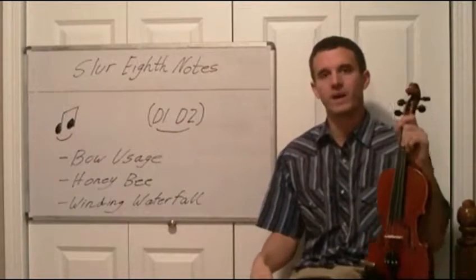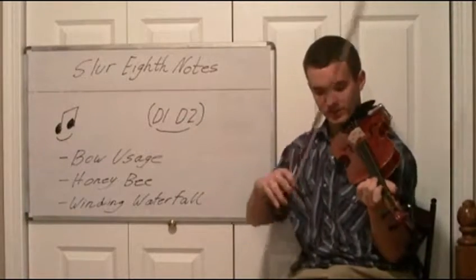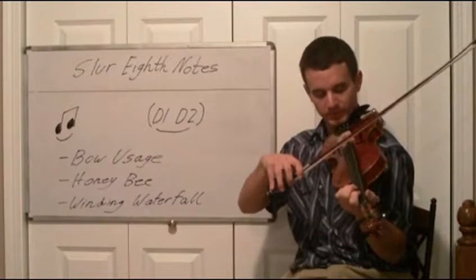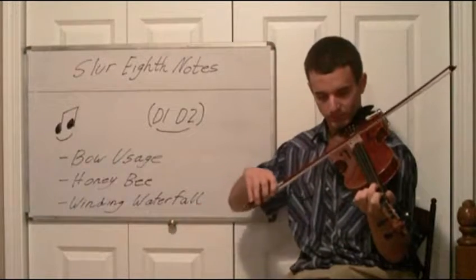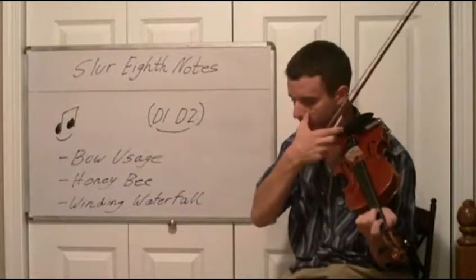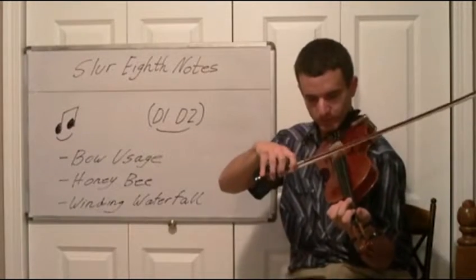Let's try the next one, which is going to be Winding Waterfall. I'm going to start off with a D0 half note, D2 half note. Next part we're going to do G1, G2, eighth notes slurred.